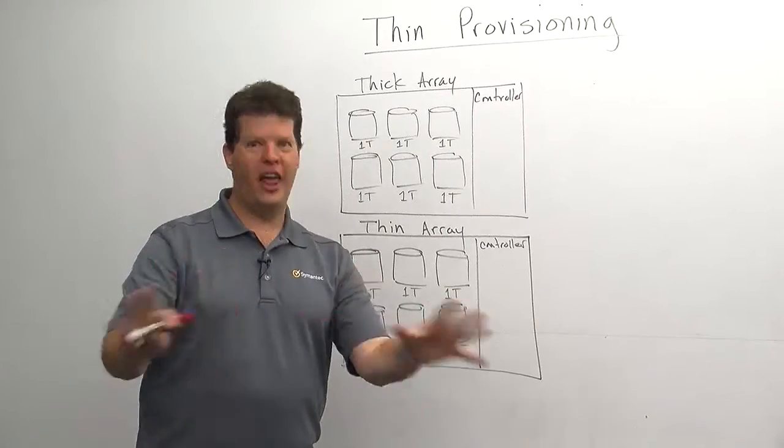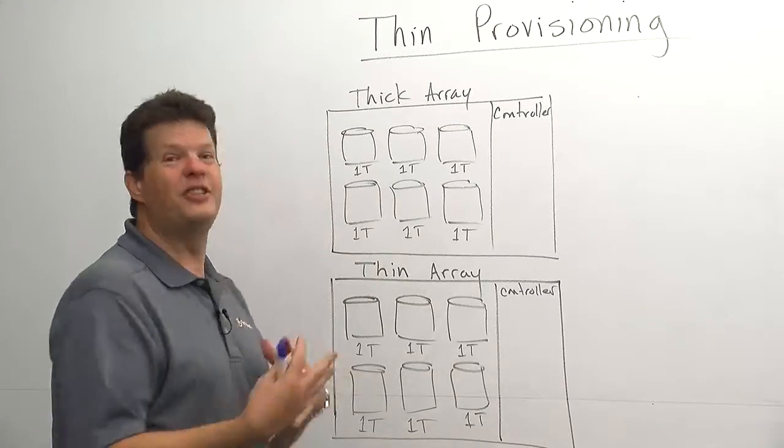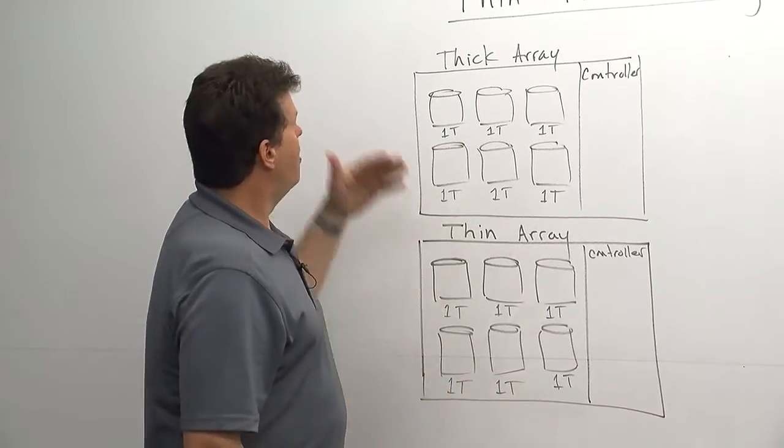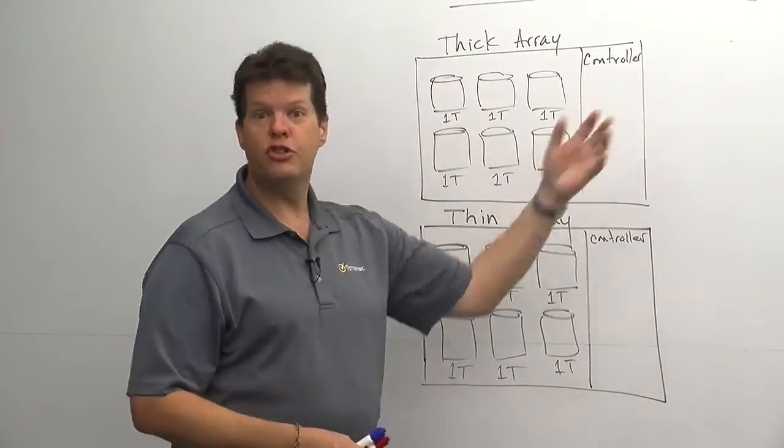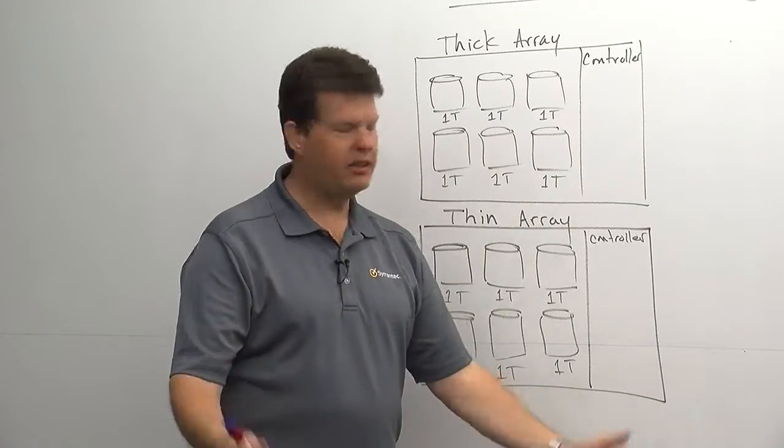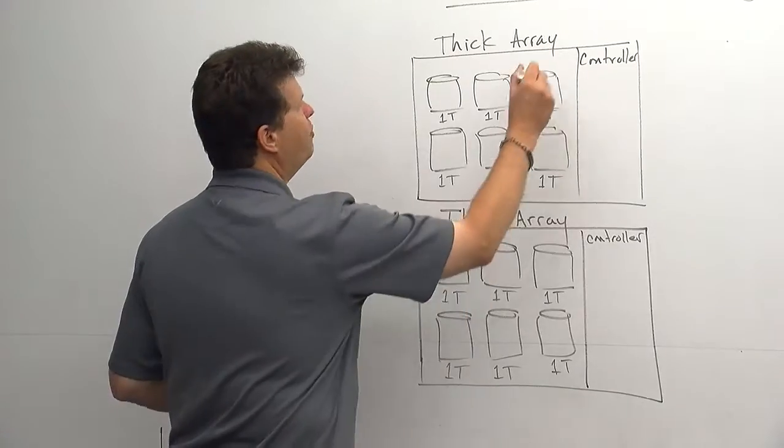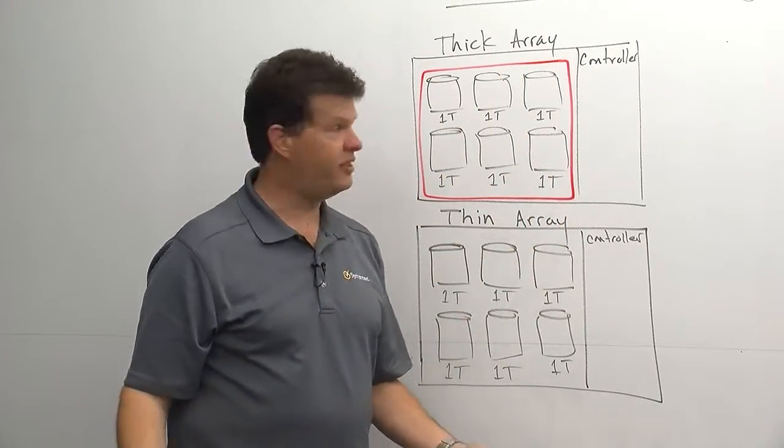First, let's talk about non-thin provisioning arrays. Sometimes they're referred to as a thick array. But this is the old traditional arrays, essentially. This is a hardware-based raid array. We have disks within the array. We have a controller. And what we're going to produce is a virtual disk known as a LUN, occasionally. And so within the array, there'll be groupings of disks in which we're going to pull disk space to create these virtual devices, these virtual disks.